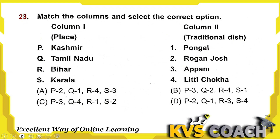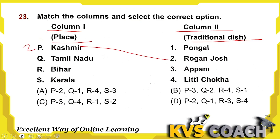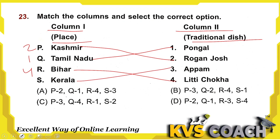Next: match the column — place names with their traditional dishes. Kashmir's traditional dish is Rogan Josh (P-2). Tamil Nadu's traditional dish is Pongal (Q-1). Bihar's traditional dish is Litti Chokha (R-4). Kerala's traditional dish is Appam (S-3). So the answer is P-2, Q-1, R-4, S-3.